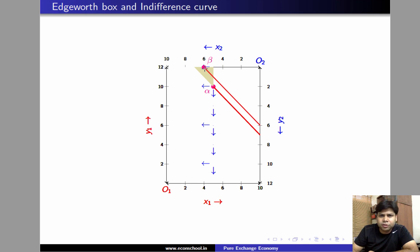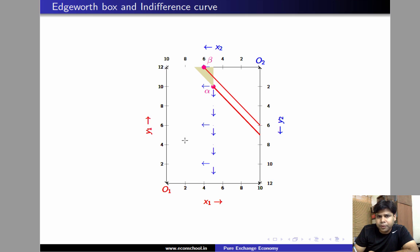As an exercise, you might want to pick points on the vertical axis of individual 2 and the horizontal axis of individual 1, and with the same line of reasoning try to figure out that any point lying on these two axes is also not efficient. Since alpha was an arbitrary choice from inside the box, we have shown that any point inside the Edgeworth box is not efficient. The only things that remain to show are points on the vertical axis of individual 1 and the horizontal axis of individual 2.